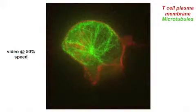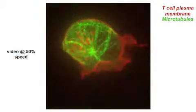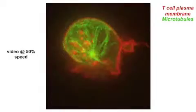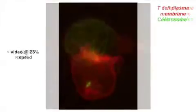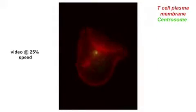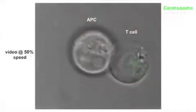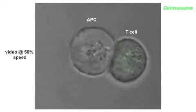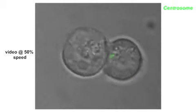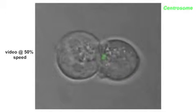Hammer doesn't rule out a limited role for cortical microtubule sliding, but the capture-shrinkage mechanism probably allows T cells to reposition their centrosomes with greater efficiency and reproducibility.